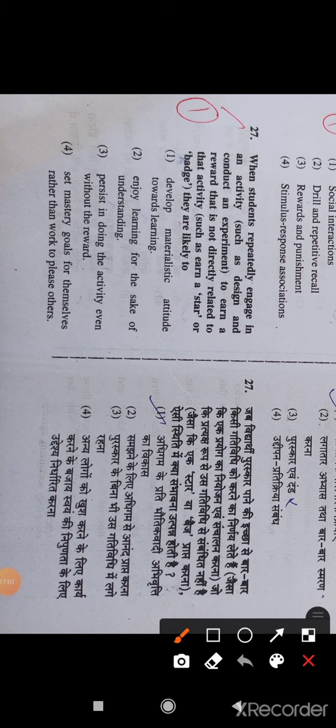Question number 27: When students repeatedly engage in an activity such as design and conduct an experiment to earn a reward that is not directly related to that activity such as earn a star or badge, they are likely to develop materialistic attitude over learning. Option 1 is the right answer.